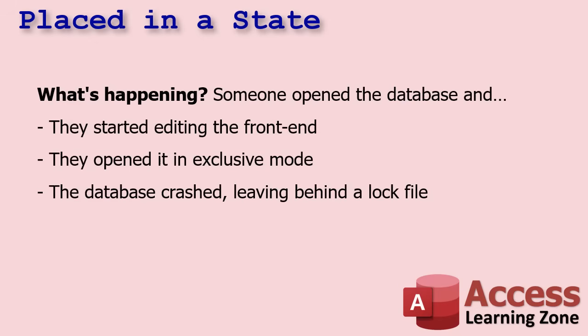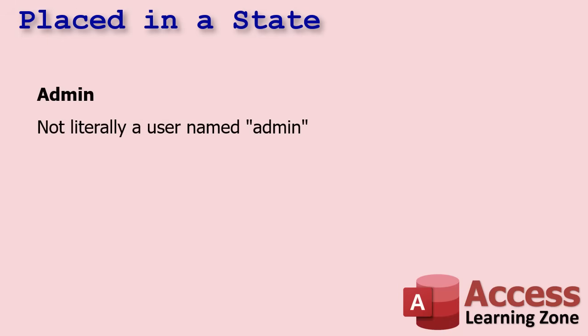This can happen if you're working on the database and your computer reboots, or the power goes out, and the database doesn't get closed properly. A lock file stays behind — I'll show you what that is in just a moment. Interesting side note: it says 'user admin,' but it's not usually a user named admin. This comes from the old Access workgroup, the legacy stuff back in 2003. It just means a default Access user account — it could be any Windows user on that machine. So if you're wondering who's admin, it might not actually be someone named admin.